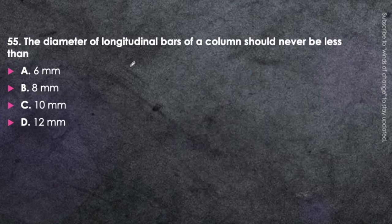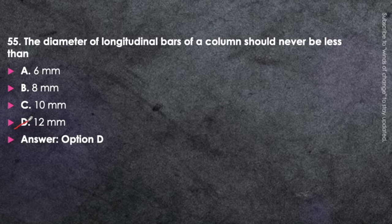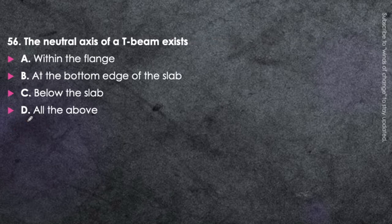Next question: The diameter of the longitudinal bar of a column should never be less than 12 mm — option D. This refers to the main bar of the column, as explained in the video of important IS-456 provisions, the link of which is given in the description box.